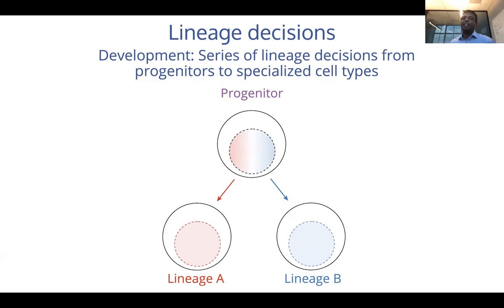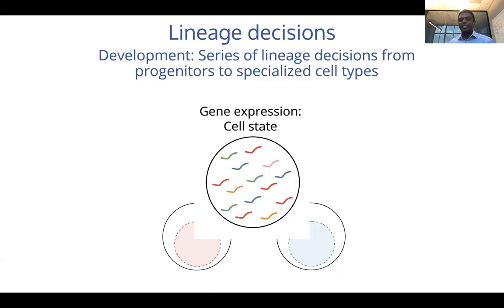The next question is how to represent the current state of any given cell. We can use an abstraction: the gene expression profile — what are the collection of genes that are expressed and to what levels — effectively defines the feature set of the cell, and that is what we use to represent cell state.